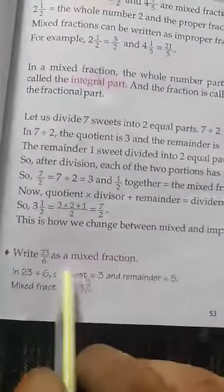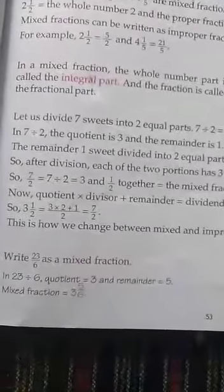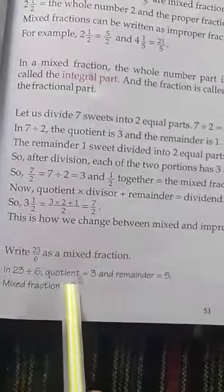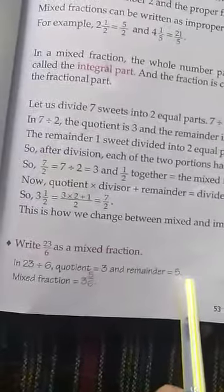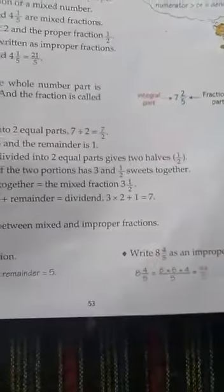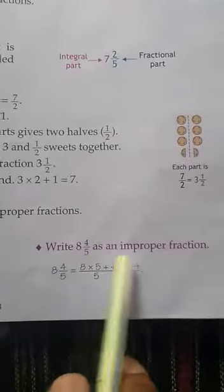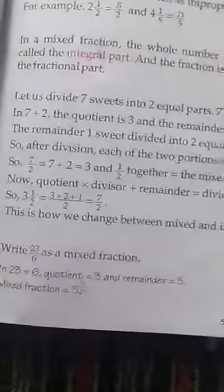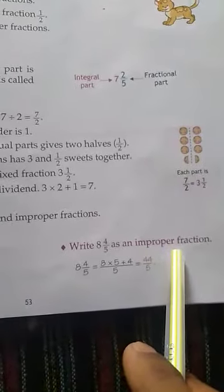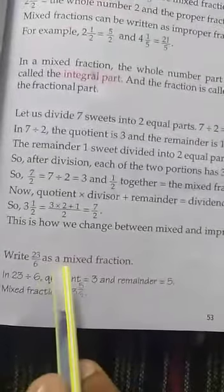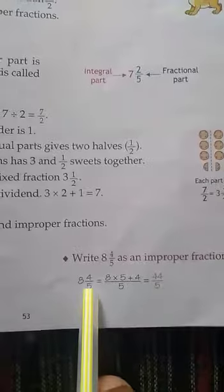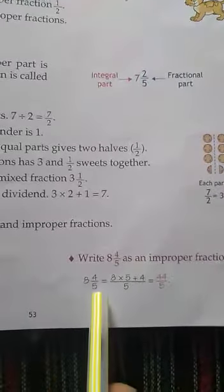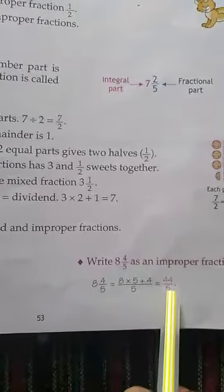अब हम सीखेंगे improper fraction को mixed में बदलना। Example: 23 divided by 6 — quotient 3 and remainder 5, so mixed fraction is 3 whole 5 upon 6. And mixed fraction को improper में बनाना: 8 whole 4 upon 5 को improper में करना है, तो 5 × 8 = 40, plus 4 = 44, so it becomes 44 upon 5.